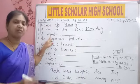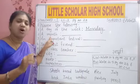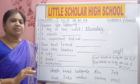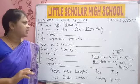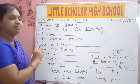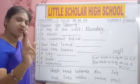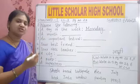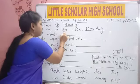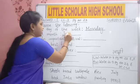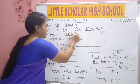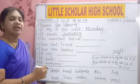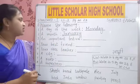A month — we have 12 months and all 12 months have a name. Any one month name you can write. We will write January: J-A-N-U-A-R-Y. January.